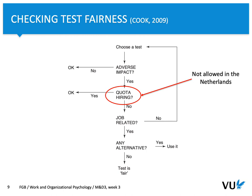If differences are job-related, we move forward and ask: is there an alternative? Can we replace this specific test with another version that produces fewer group differences? For instance, instead of a mental capacity test requiring high verbal load, we can reduce that load by using non-verbal tests. If such an alternative exists, we should use it and the procedure is fair. But if there is no alternative, the conclusion is that even though we find differences between groups, the test is still fair. And that's it — thank you for your attention.